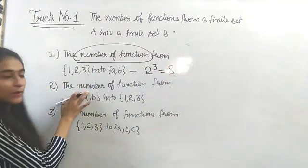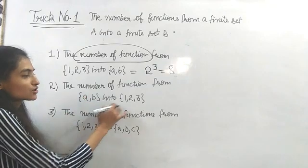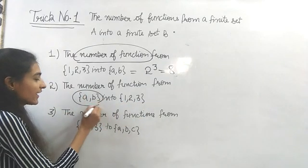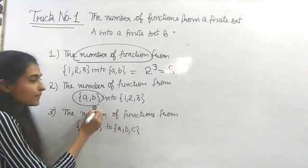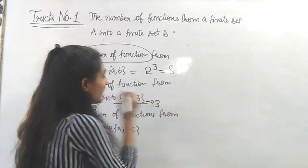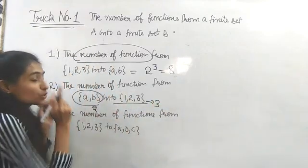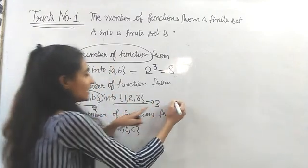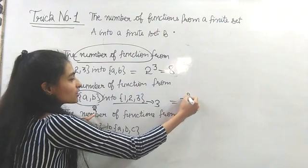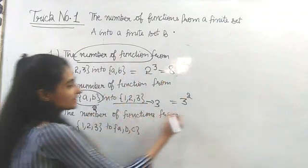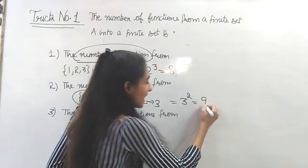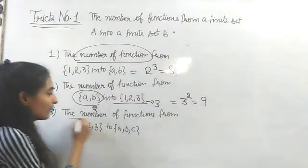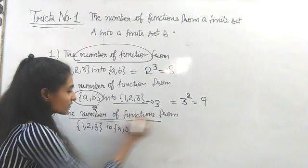Another question: the number of functions from this set to this — the first set contains two elements and the second set contains three elements. So the total number of functions is three raised to power two, that is nine.